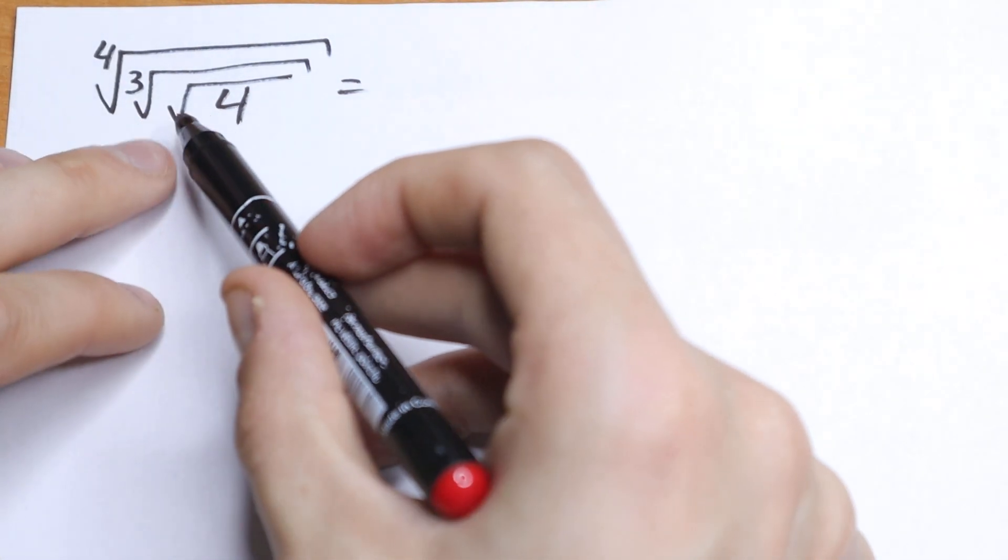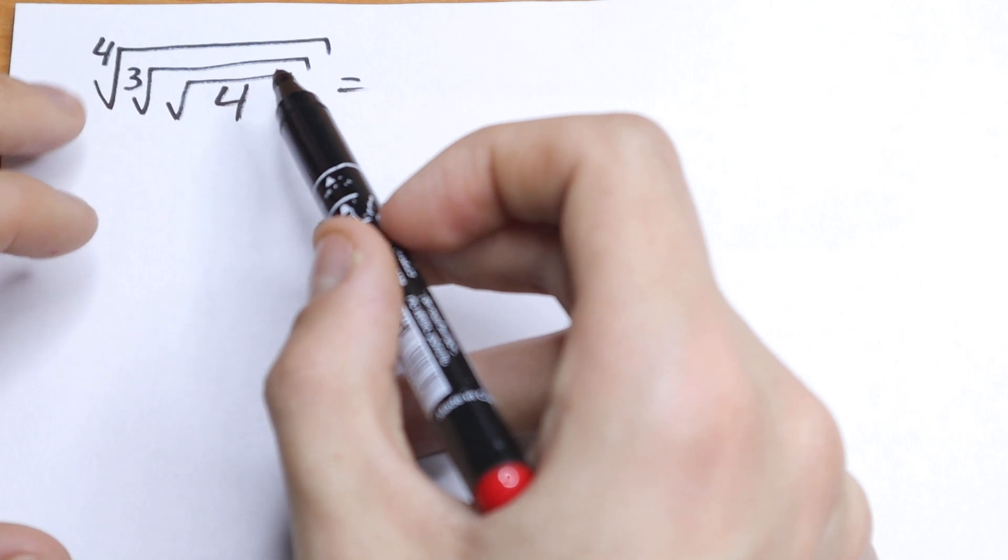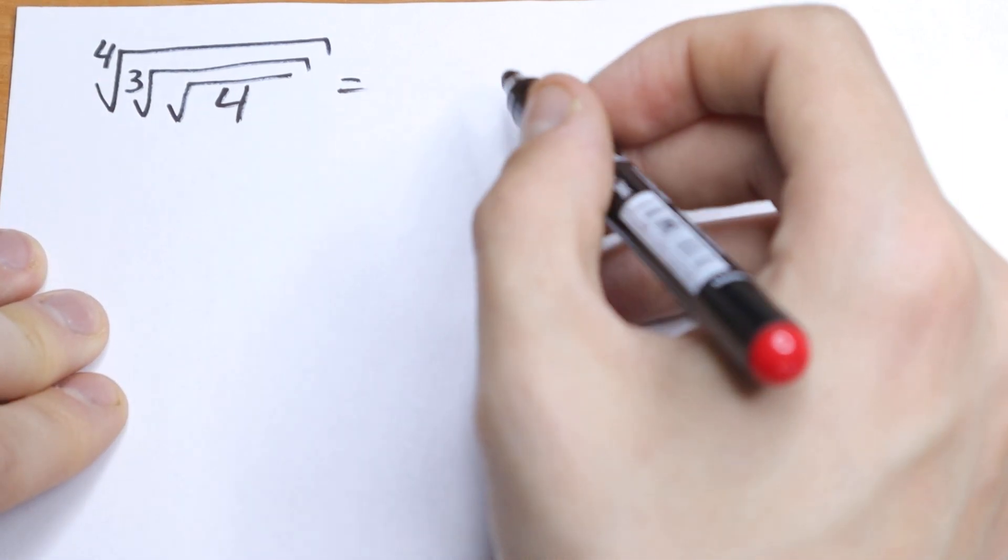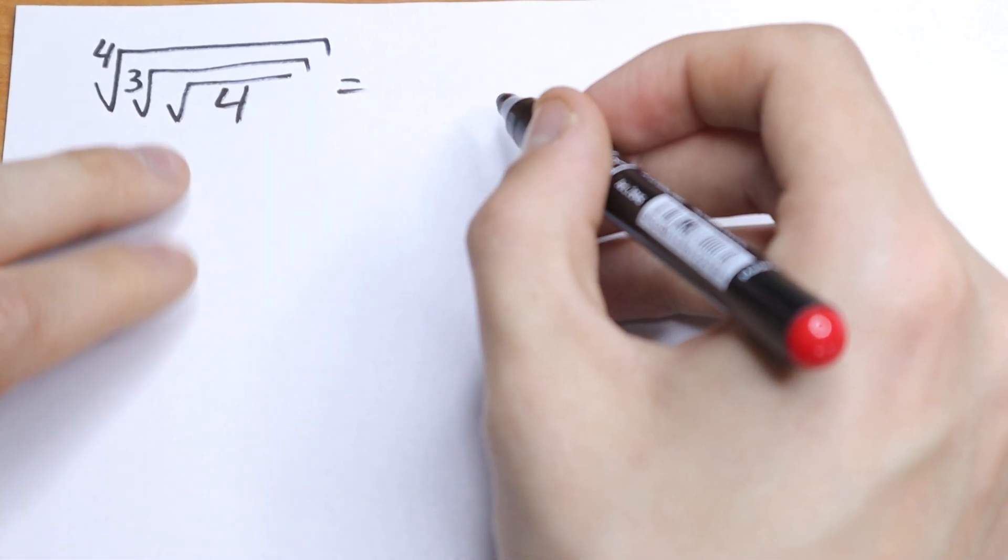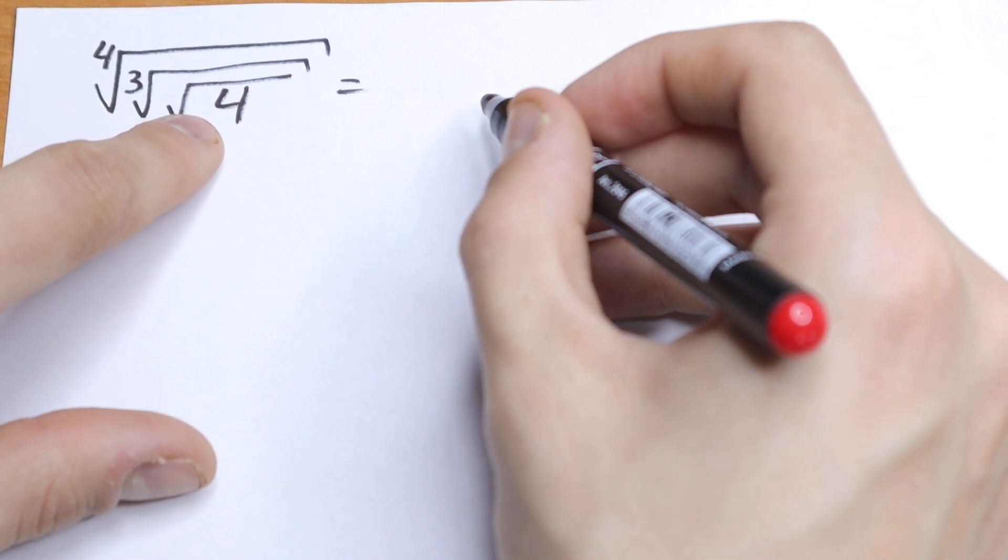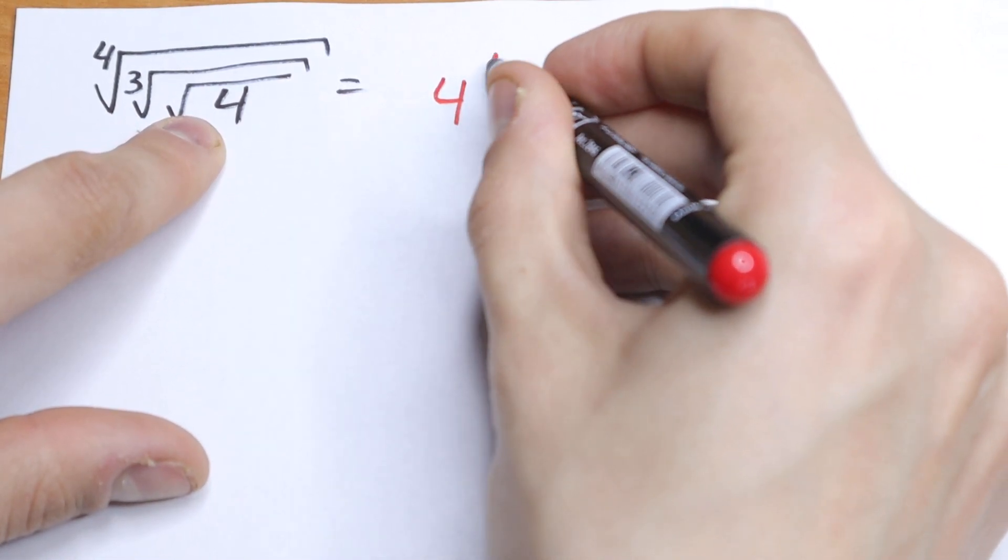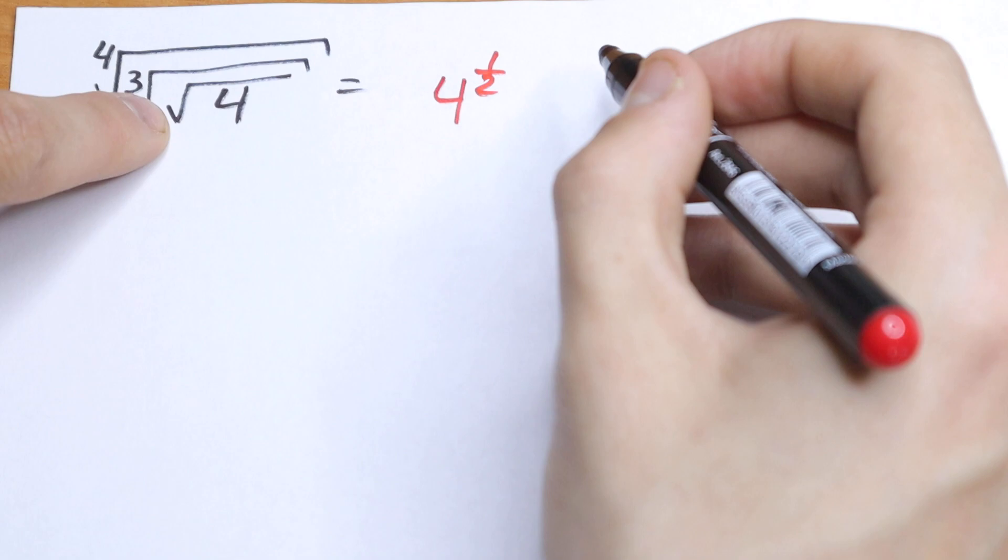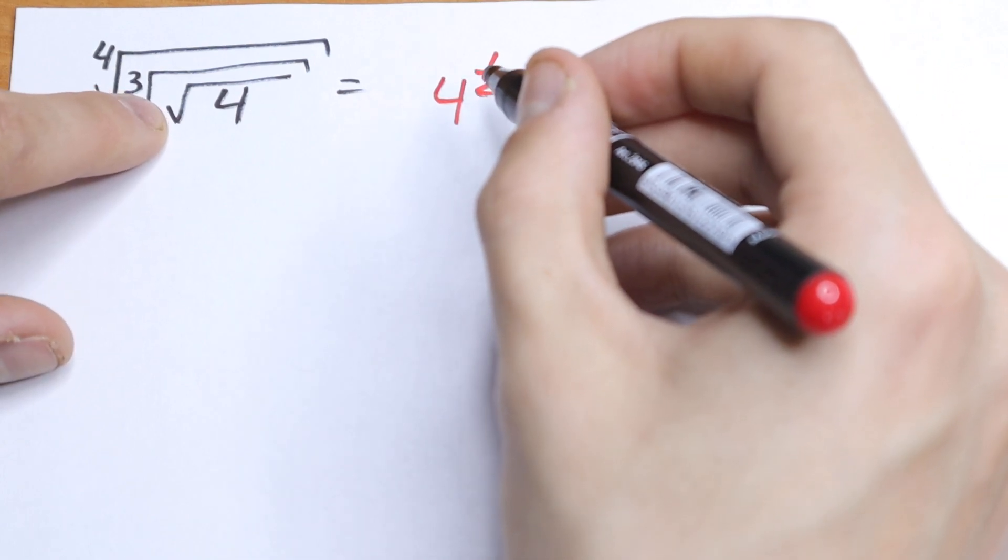We need to rewrite this square root sign, cube root sign, and 4th root sign using another way, using a power. What we will have? Take a look, we raise this 4 to the power one half, because we have square root power right here.